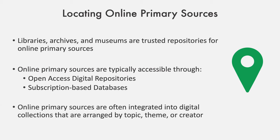Online primary sources can be found all throughout the web, but for our purposes here today, I'll be focusing solely on locating resources from trusted repositories like libraries, archives, and museums. Access to digitized and born digital primary sources from these trusted repositories is generally provided in one of two ways: either through an open access digital repository that is publicly available online for free, or through a subscription-based database that users must pay for to gain access. Within these platforms, online primary sources are typically integrated into digital collections arranged topically, thematically, or by creator. Keep in mind that while many primary sources are available online today, there are many more still only available in their physical format. If you cannot find what you're looking for online, contact a librarian or archivist at one of those types of institutions to assist you.